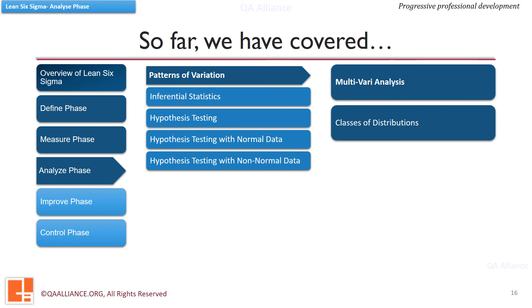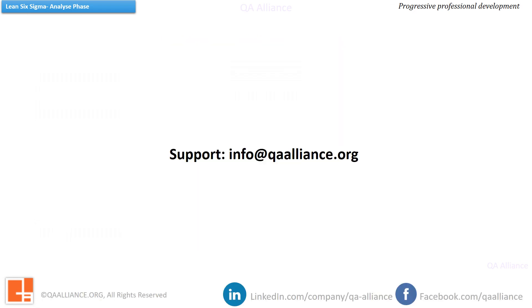This unit covered the concepts related to patterns of variation. We have understood by now multivari analysis, how does it help in next sifting. We also learned about the classes of distribution and what is the significance of normal data. The next unit in analyze phase is on inferential statistics. We'll get introduced to the basics of inferential statistics. Here we come to an end to this lesson. Should you need any support, feel free to contact us. Thanks for watching this video, and see you in the next lesson.